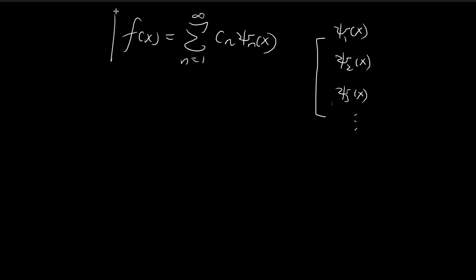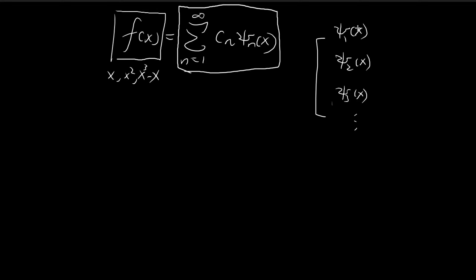What completeness means is that any function f(x) — this function could be anything, it could be x, x squared, or x³ minus x — can be expressed as a linear combination of these ξ functions. The reason why this is true is because of Fourier series. If you break apart the ξ term, you see it equals a sine expression, so we're essentially just doing Fourier series. Theorems tell us that these sine functions are complete, so any linear combination of them can give us any function we want.